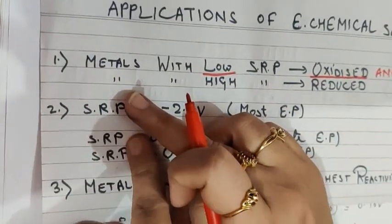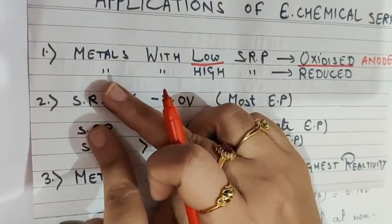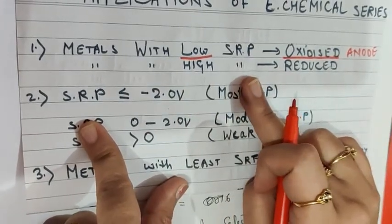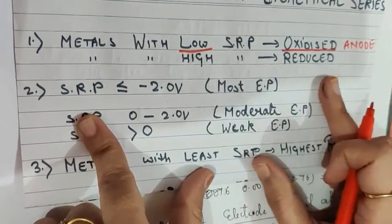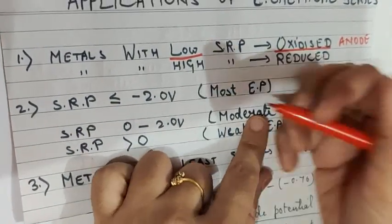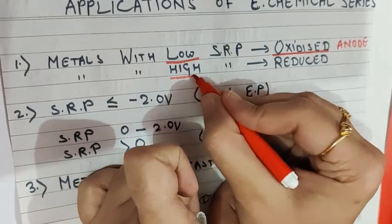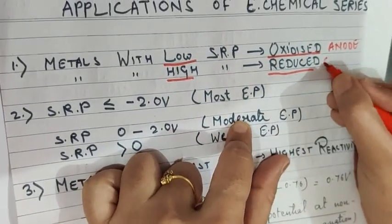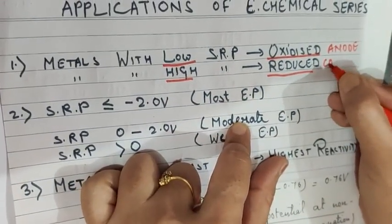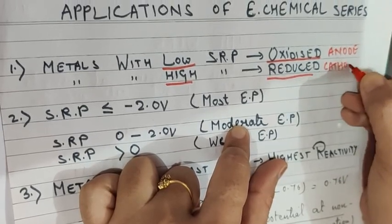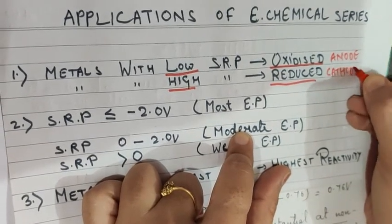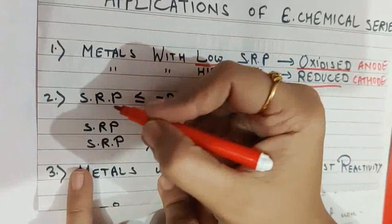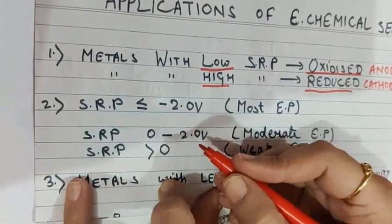Contrary to this, metals with high standard reduction potential (SRP) get reduced, so they are going to form the cathode.